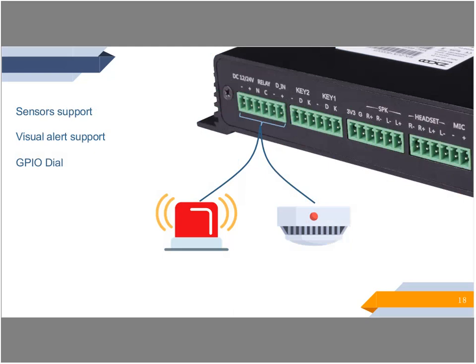The X30 SIP Paging Gateway can also be used in security facility applications. Sensors and other probes can be connected for monitoring emergency events like fire, flood, earthquake, and intrusion. Once a sensor connected to the X30 is triggered, it can automatically dial emergency numbers to trigger a system-enabled alarm. You may also connect a visual alarm to the X30 — when sensors are triggered, the alarm will sound automatically. It can be used in scenarios where unattended security monitoring is needed.